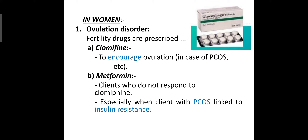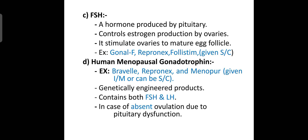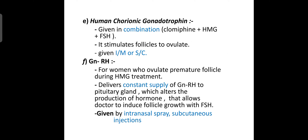For treatment of infertility in women, if there is an ovulation disorder, fertility drugs such as clomiphene are prescribed to encourage ovulation. In cases of PCOS, metformin is given to clients who do not respond to clomiphene, especially when linked to insulin resistance. Follicle-stimulating hormone (FSH), produced by the pituitary gland, controls estrogen production by the ovaries and stimulates maturation of egg follicles. Human menopausal gonadotrophins (hMG) are also hormonal drugs prescribed to women. Human chorionic gonadotrophin (hCG) is given in combination with clomiphene or hMG and stimulates the follicle to release the egg; it is given intramuscularly or subcutaneously.